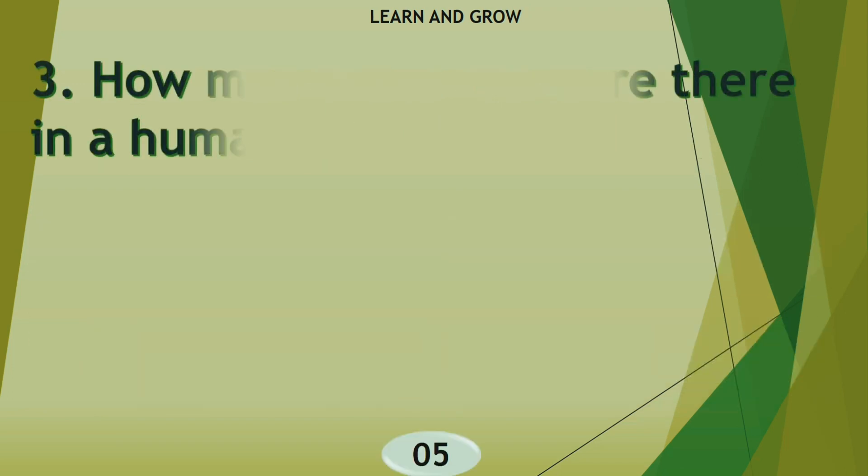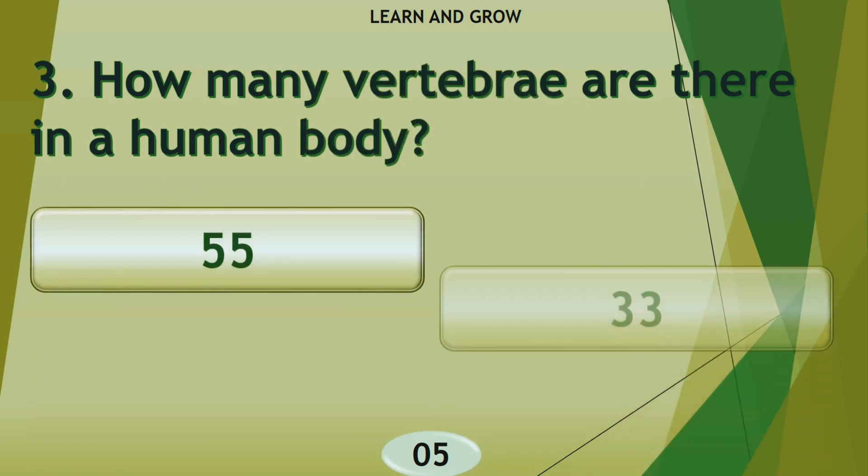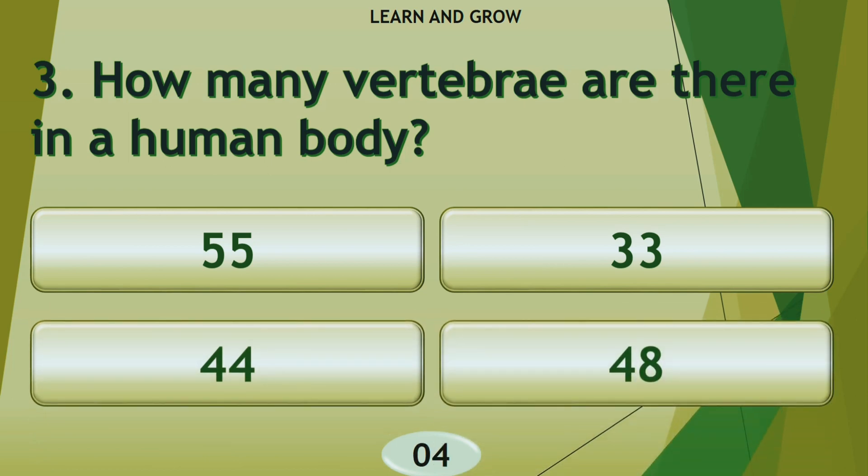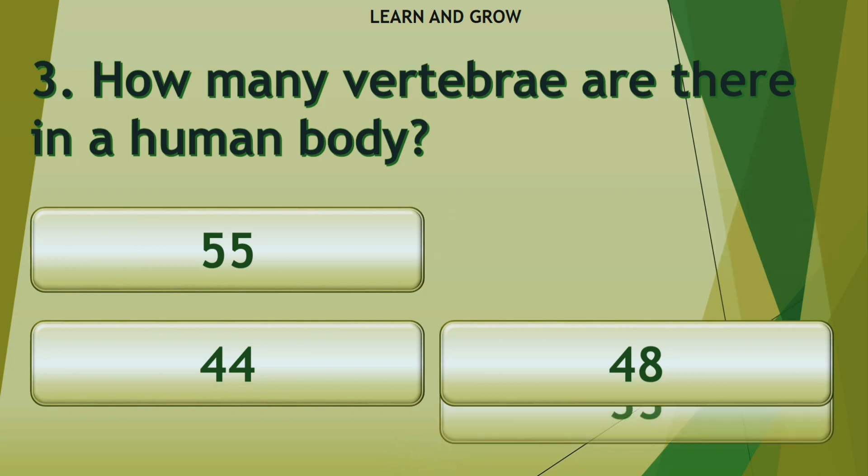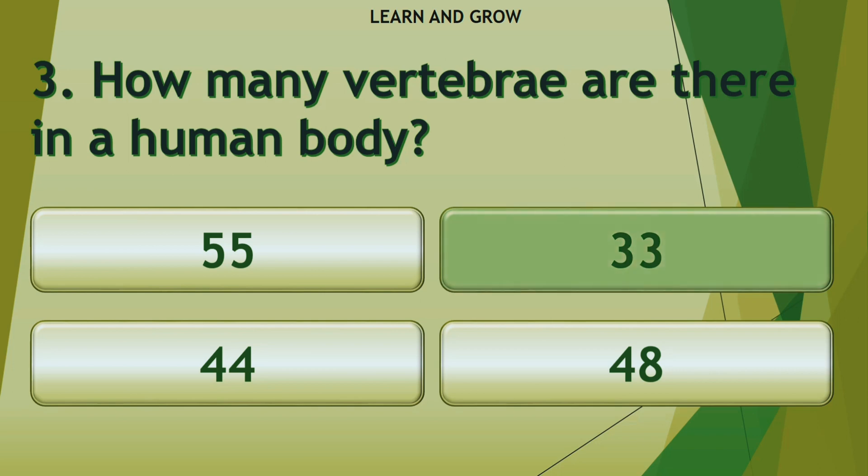How many vertebrae are there in the human body? Options are A: 55, B: 33, C: 44, or D: 48. The right answer is 33.